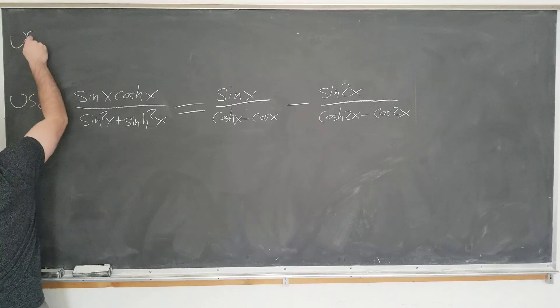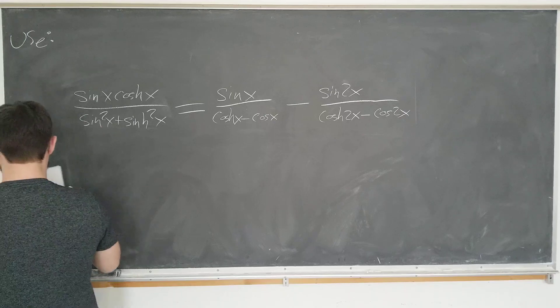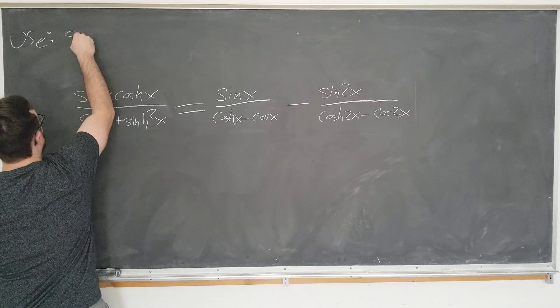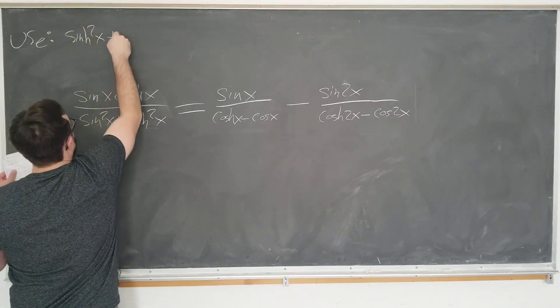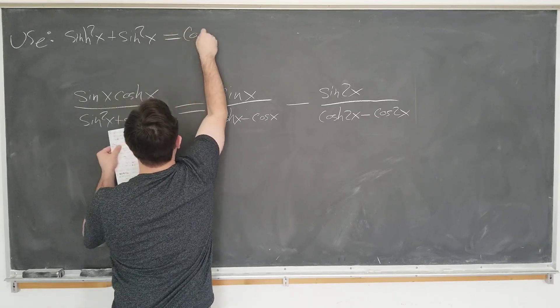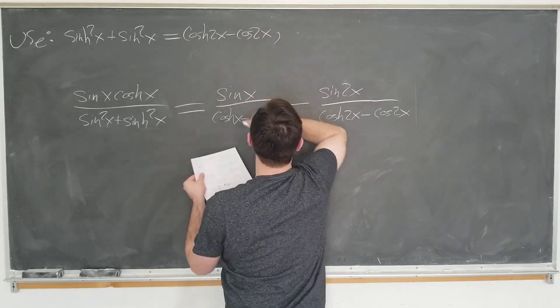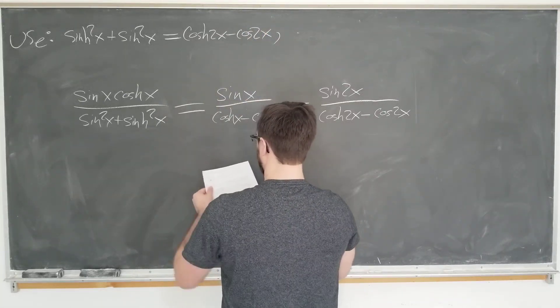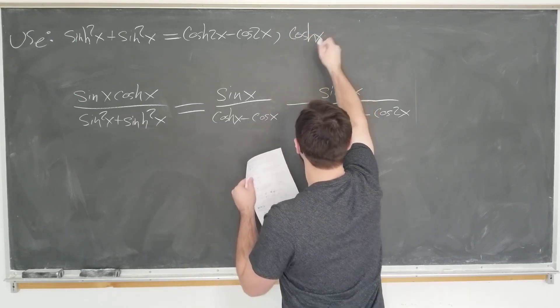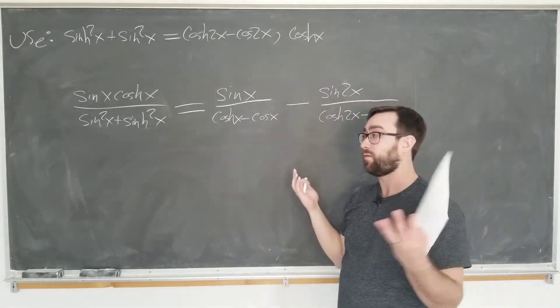We're going to need these identities here that I derived, and you can too. We're going to need the fact that sin squared x plus sinh squared x is equal to cosh 2x minus cos 2x.